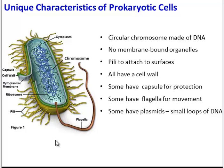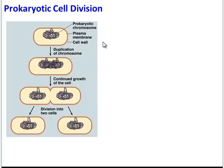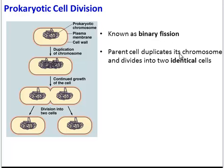Some will also have tiny loops of DNA known as plasmids. Prokaryotic cells divide in a slightly different way than eukaryotic cells. Basically, the parent cell duplicates its one chromosome and then splits in half. This is known as binary fission — fission means to split, and binary refers to two — producing two identical cells. You might think this looks similar to mitosis, but it is not mitosis, because mitosis involves division of the nucleus. A prokaryotic cell has no nucleus, thus it cannot do mitosis.